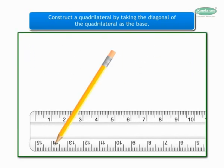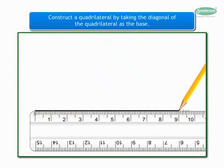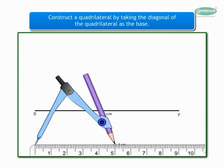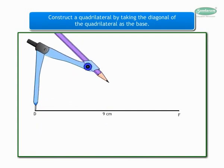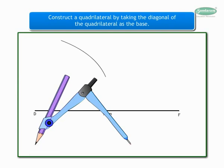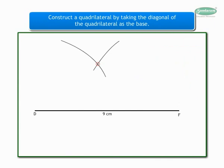Draw segment DF of 9 cm with the help of a ruler, which is the diagonal and our base of the quadrilateral. As you can see from the rough figure, the measure of side DE is equal to 5 cm. Take 5 cm on the compass and draw an arc from point D above the base on the right-hand side. Similarly, as the measure of side EF is 6 cm, we shall measure 6 cm on the compass to draw another arc above the base intersecting the previous arc from point F on the left-hand side.